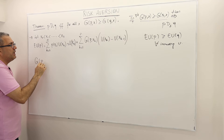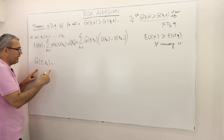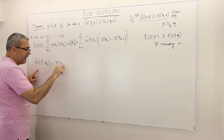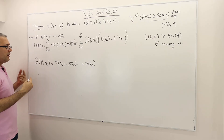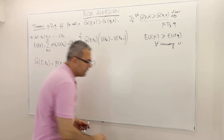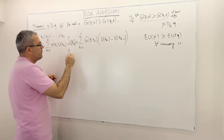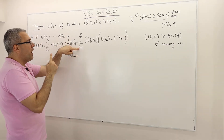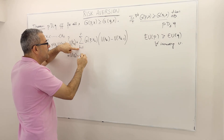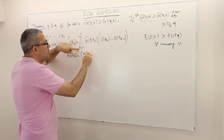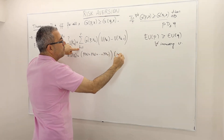What is G of P(X_K)? It's the probability that the prize is going to be higher than or equal to X_K, so it equals P(X_K) + P(X_{K+1}) + ... + P(X_N). So now for K=1 in the sum, G of P(X₁) is P(X₁) + P(X₂) + ... + P(X_N), multiplied by U(X₁) − U(X₀).